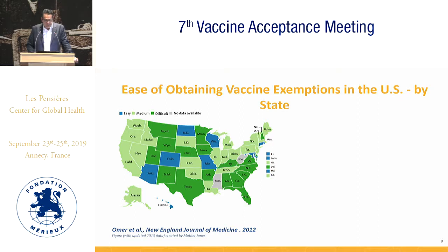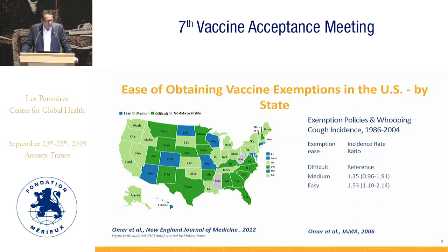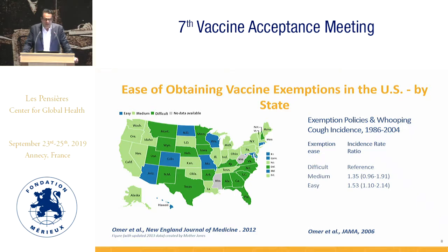When we looked at the impact of ease of exemptions, we found that even after aggressively adjusting for baseline demographic characteristics between states, there was an impact on disease rates. We intentionally did this analysis at the state level because the policies are made at the state level. Previously it had been shown that the individual risk of measles is 35-36 times higher if your child was exempt versus vaccinated, and the individual risk of pertussis was approximately five to six times higher if you were exempt versus vaccinated. This analysis attracted attention and informed policy making.